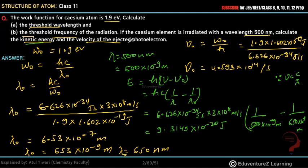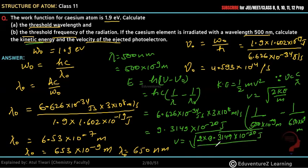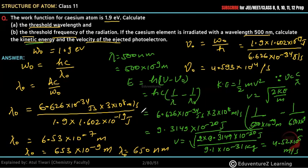So the kinetic energy comes out to 9.3 × 10⁻²⁰ Joules. Using KE = ½mv², with electron mass m = 9.1 × 10⁻³¹ kg, we find the velocity v = 4.5 × 10⁵ meter per second. So this is the velocity of the ejected electron. I hope this question was understood. Thank you.